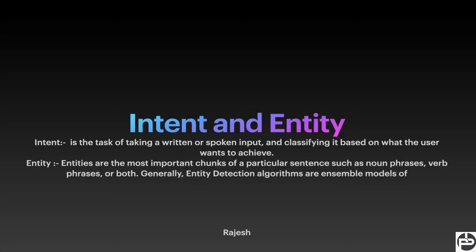Once the book-ticket intent has been identified, we need to extract specific entities like source station, destination station, date of journey, and number of passengers from the text. This is what the entity extraction model does — it pulls out the relevant information needed to perform the action.